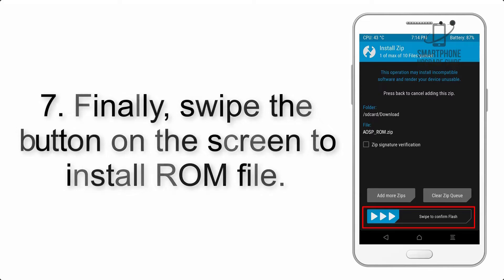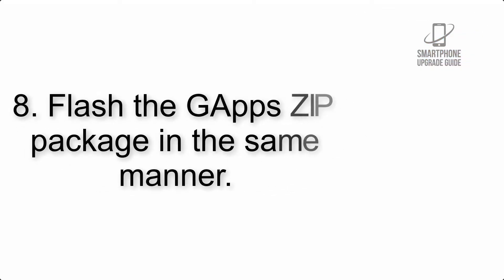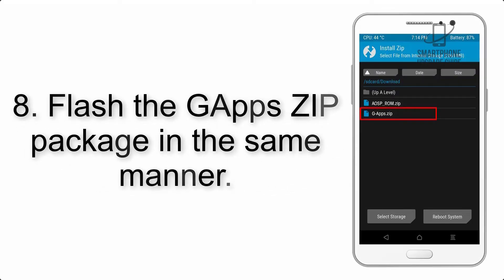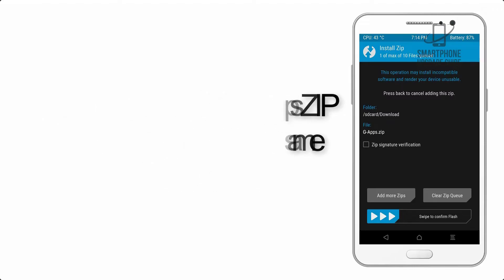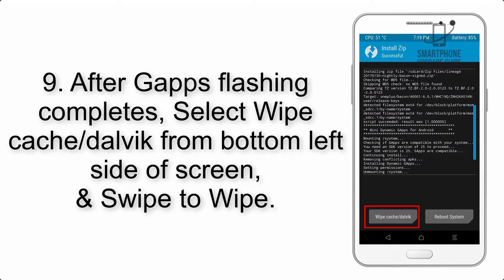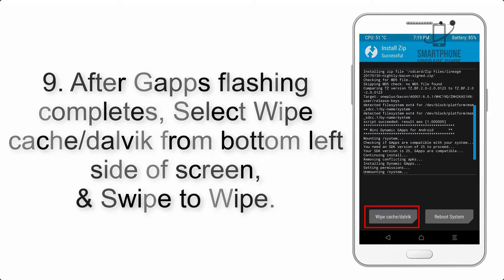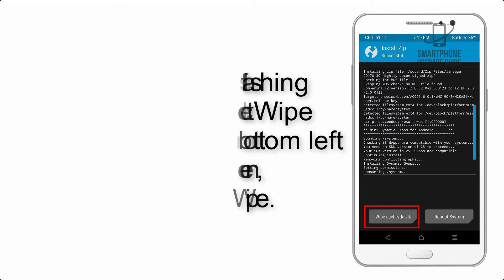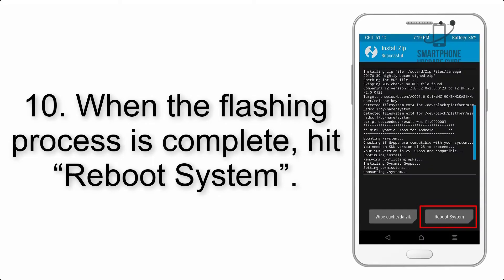Step 8: Flash the GApps zip package in the same manner. Step 9: After GApps flashing completes, select Wipe Cache and Dalvik from the bottom left side of the screen and swipe to wipe. Step 10: When the flashing process is complete, hit Reboot System.